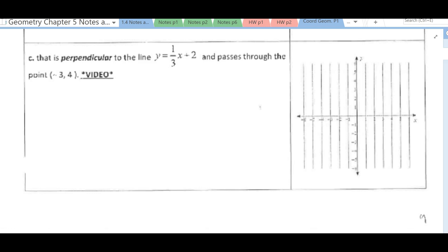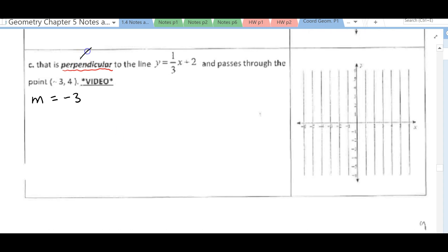So since we know that the line is perpendicular, then we know that our new slope has to be the opposite, so it's going to be negative, and the reciprocal. The reciprocal of 1/3 is 3. So remember, any time you're doing perpendicular, it has to be both of those things. It has to be the opposite, so if it's positive, it's negative, if it's negative, it's positive, and it needs to be the reciprocal.